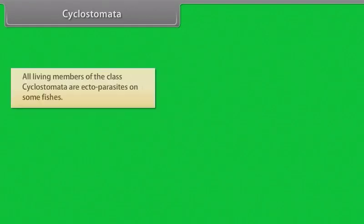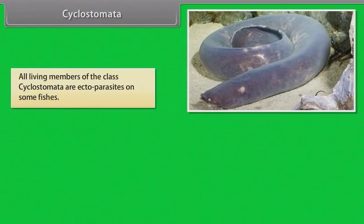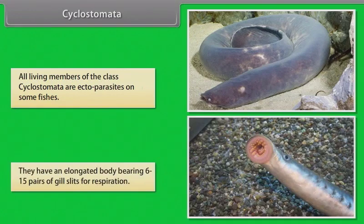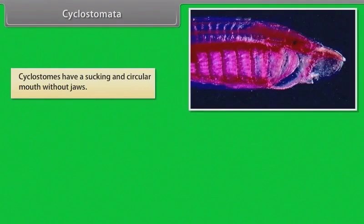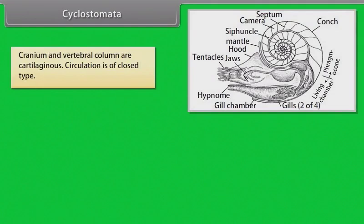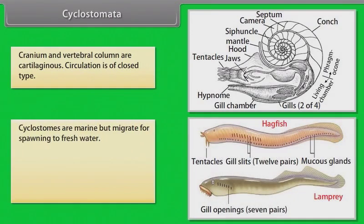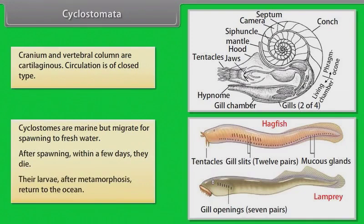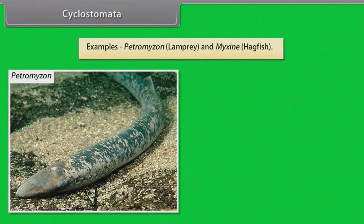Cyclostomata: All living members of the class Cyclostomata are ectoparasites on some fishes. They have an elongated body bearing six to fifteen pairs of gill slits for respiration. Cyclostomes have a sucking and circular mouth without jaws. Their body is devoid of scales and paired fins. Cranium and vertebral column are cartilaginous. Circulation is of closed type. Cyclostomes are marine but migrate for spawning to fresh water. After spawning, within a few days, they die. Their larvae, after metamorphosis, return to the ocean. Examples: Petromyzon (lamprey) and Myxine (hagfish).